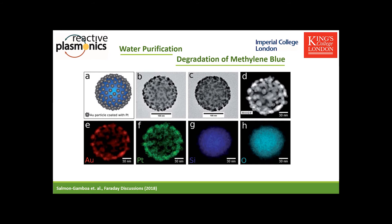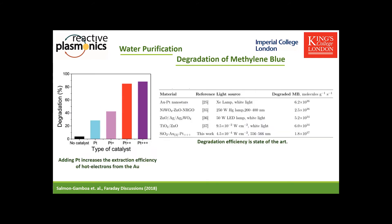In these electron microscopy images, we can clearly see the silicon and oxygen in the core and the gold and platinum decorating the surface of the particle. Upon white light illumination, as shown in the figure on the left hand side, with the correct amount of platinum on the surface, up to 90% of the methylene blue can be degraded. Comparing the performance of this catalyst with literature, we see that it is already state of the art — a very successful demonstration of photocatalytic degradation.